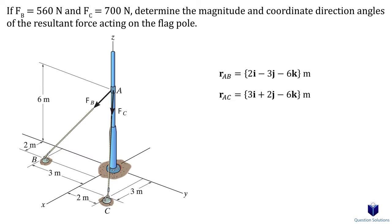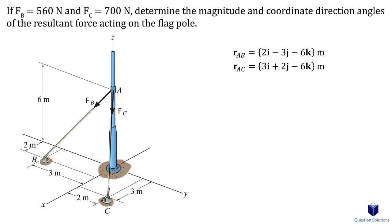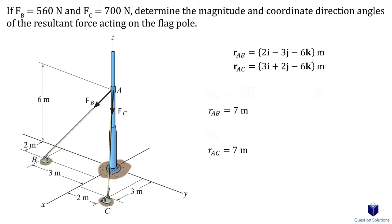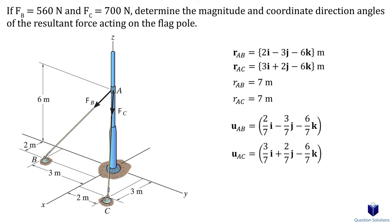Now we will find the magnitude of each of these position vectors. We do that by taking each term, squaring it, adding it all together, and then taking the square root. By the way, these magnitudes represent the distance from A to B and A to C — in other words, the length of each rope. Now that we have the magnitude, we need to find the unit vector by taking each term in our position vector and dividing it by the magnitude.